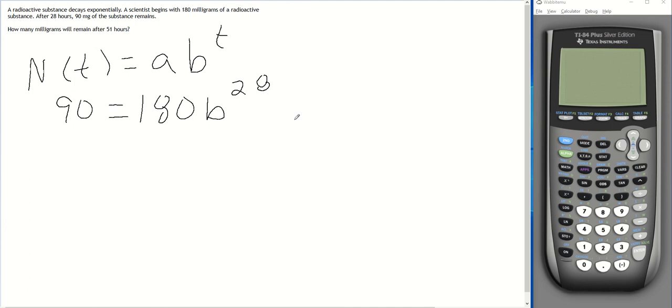And our first step is always going to be typically to define what this factor is, and that's going to tell us how much it's decaying on an hourly basis, and we can use that to solve the rest of the problem. So let's do some algebra. Let's divide by 180. We're trying to get the b by itself. So 90 divided by 180, that's going to give me one half is equal to b raised to the 28th power.